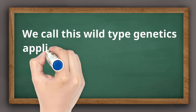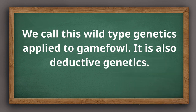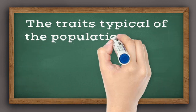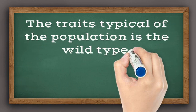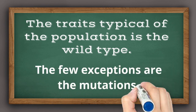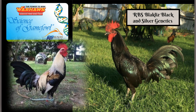It is also deductive genetics. In a population there are the dominant varieties or characteristics that are more abundant than others — meaning the traits typical of the population. These predominant characteristics are the wild type. Sometimes variations may appear in the said population: individuals with characteristics different from normal. These individuals are the mutants. The wild type are the characteristics of the most number of individuals in a population.